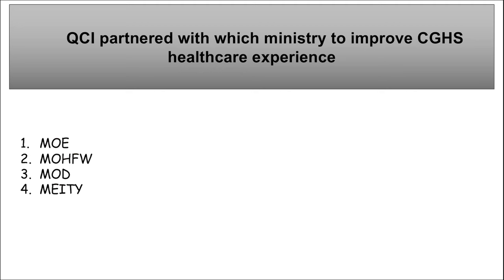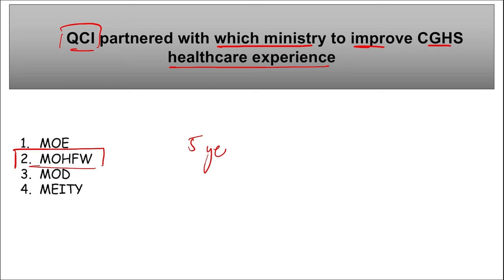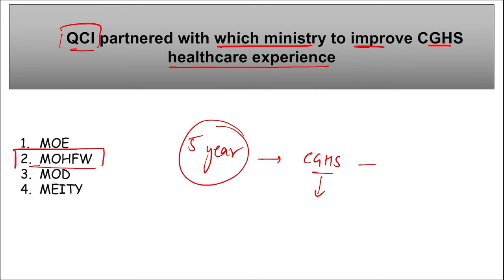Next: QCI — the Quality Council of India — partnered with the Ministry of Health and Family Welfare and initiated a five-year collaboration to transform the CGHS scheme. CGHS is the Central Government Health Scheme, which provides a medical insurance-type scheme to central government employees. Whenever they have any medical issue, they can go to CGHS-empanelled hospitals and opt for treatment free of cost.